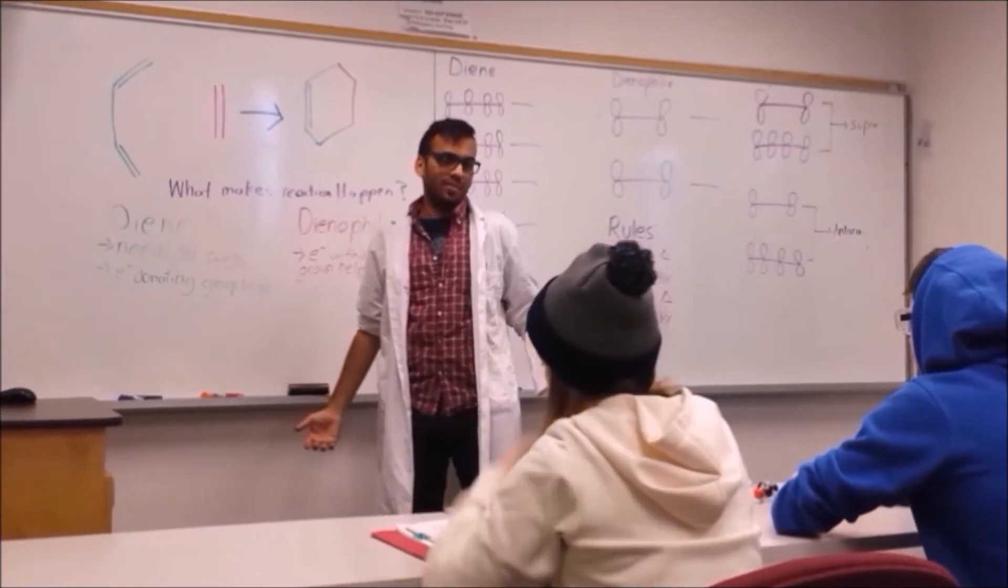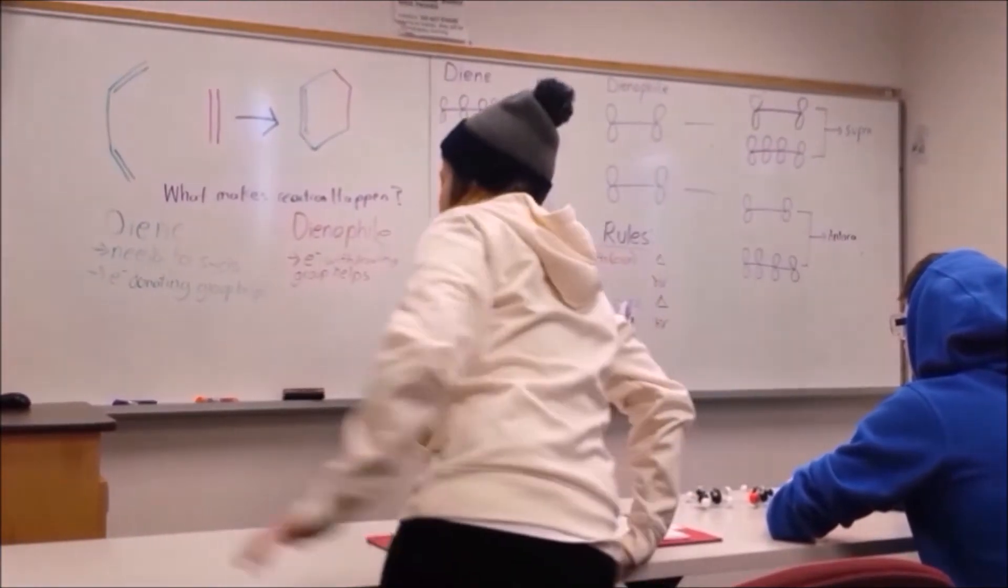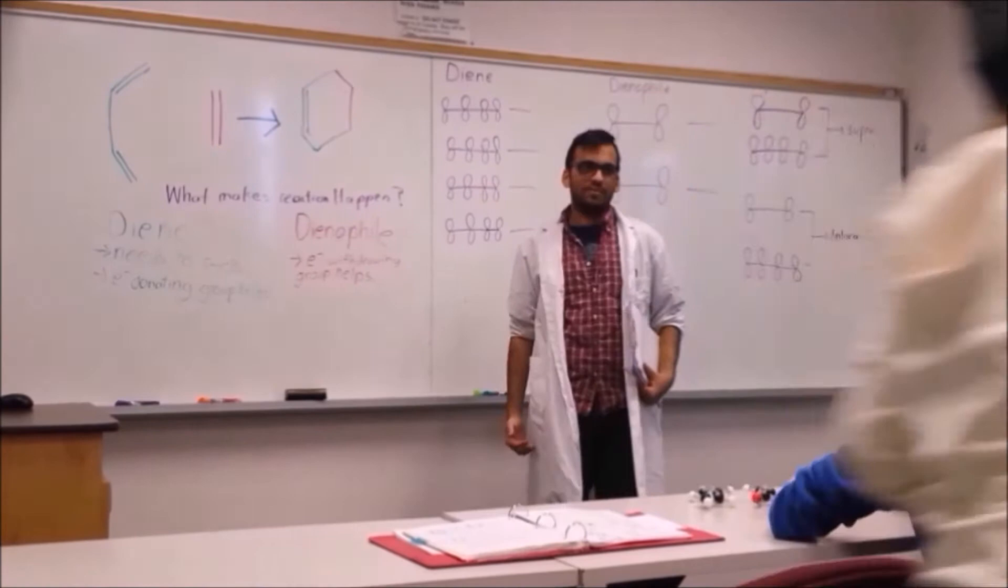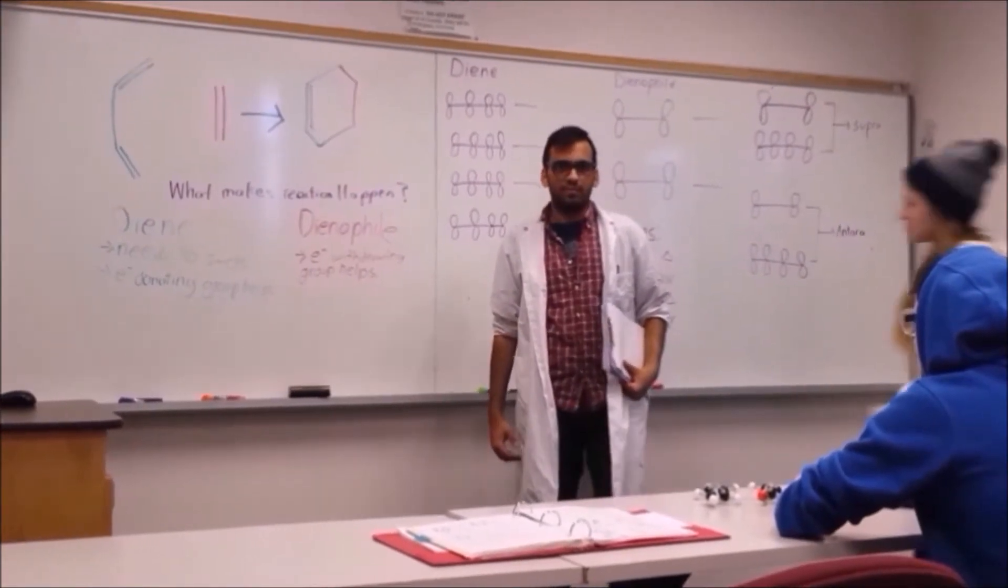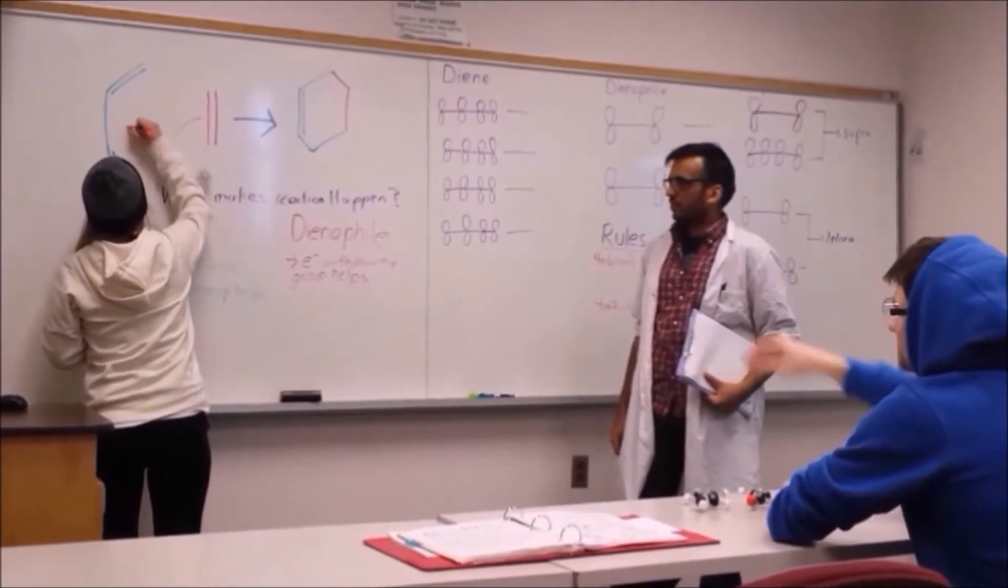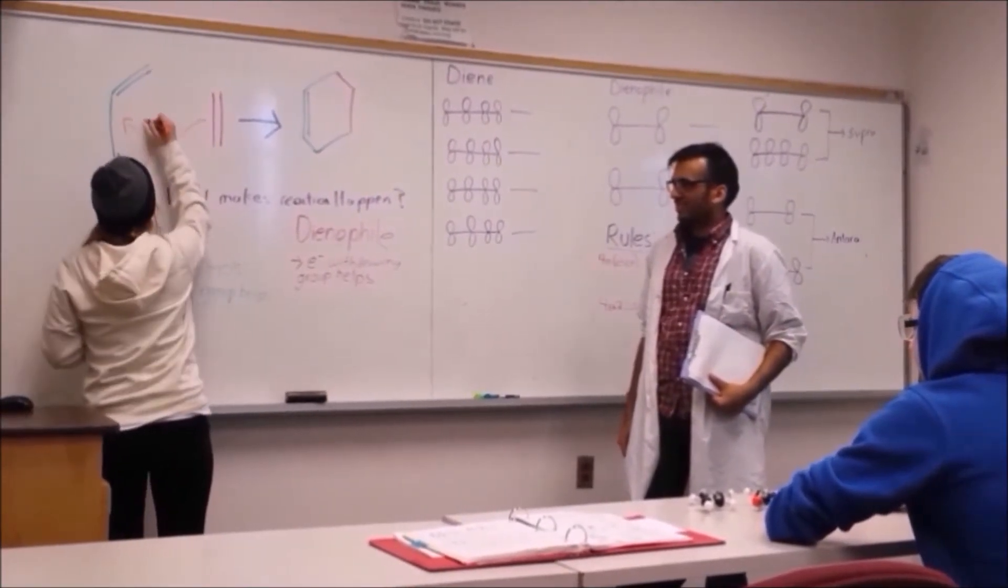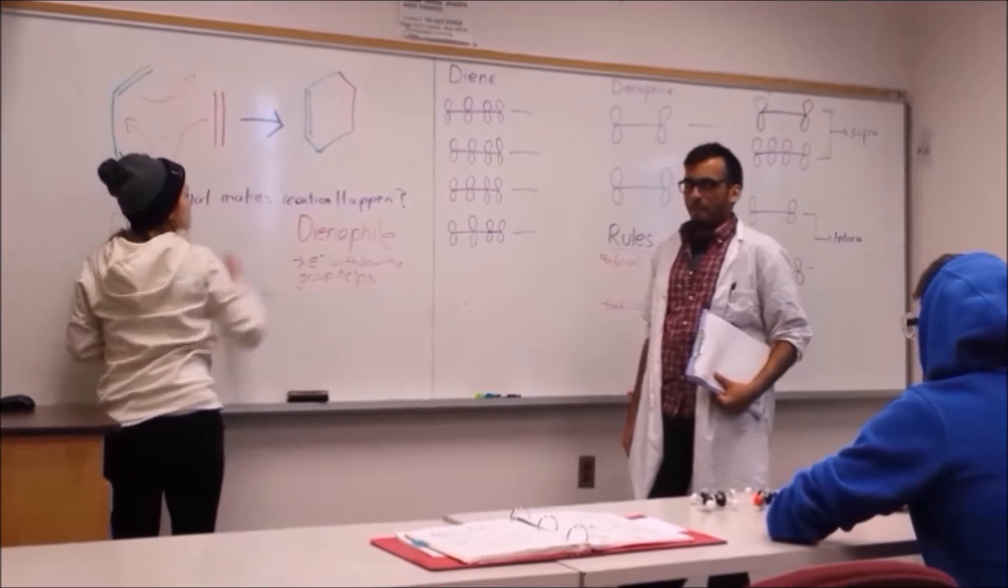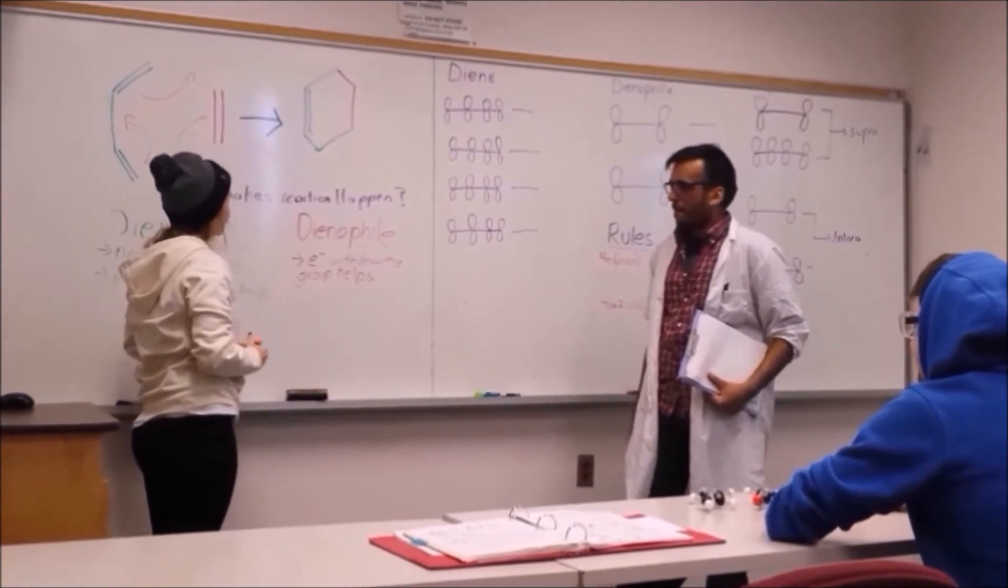Do either of you know the mechanism? Yeah! Do you want to show me? Sure! So these arrows represent the movement of the electrons, and you get your three new bonds.